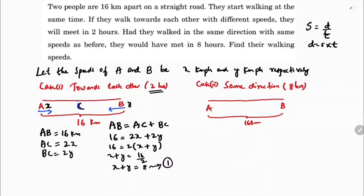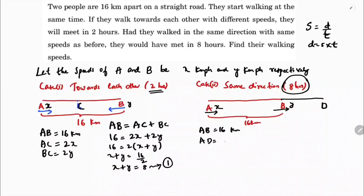Case two: if they travel in the same direction, with speeds x and y, they will meet at a point D. AB is still 16 km and it took 8 hours in this case. So AD is 8x and BD is 8y kilometers.